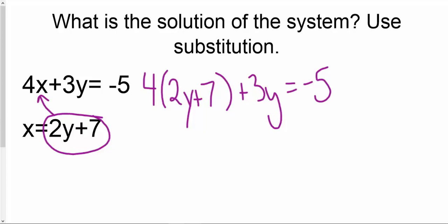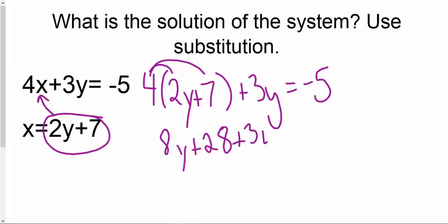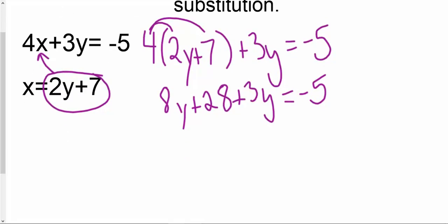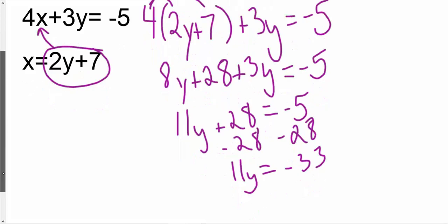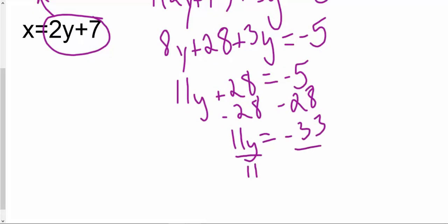In my first step, I need to distribute that 4. So that becomes 4 times 2y, which is 8y, and 4 times 7, which is 28, plus 3y — because that's still there — equals negative 5. We've got to make sure we drop that all down. So I'm going to combine my like terms to get 11y plus 28 equals negative 5. Then I'm going to subtract 28 from both sides, which gives me negative 33 equals 11y. From there, I divide both sides by 11, which gives me y equals negative 3.